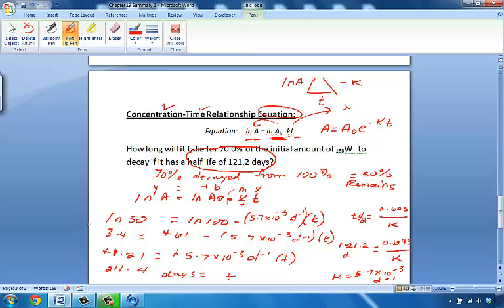So, how long did it take for a tungsten to decay by 70%? Well, if it has a half-life of 121.2 days, which would mean it decays at a 5.7 times 10 to the minus third inverse days rate, it would take it 211.4 days.